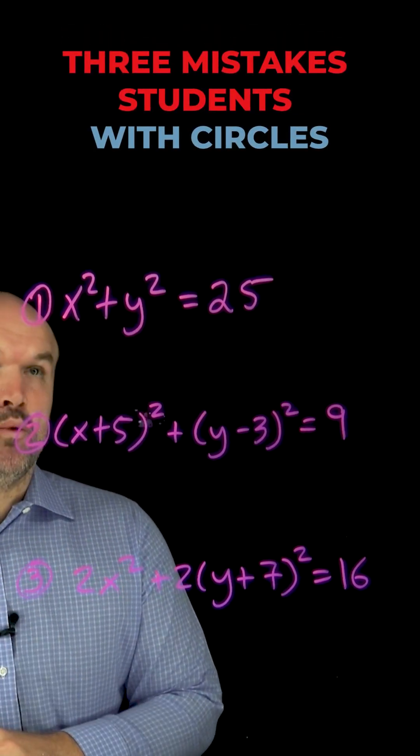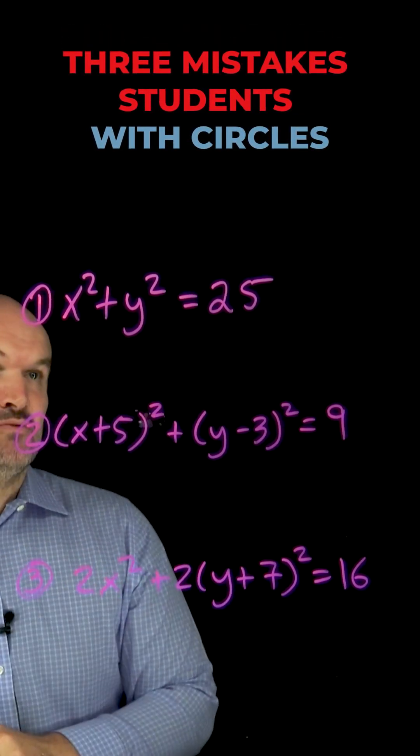All right, let's talk about three mistakes that students make with circles. So in this one, I have x squared plus y squared equals 25.